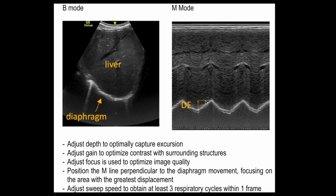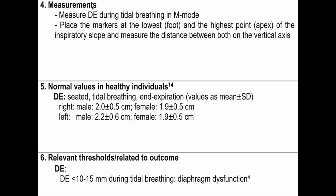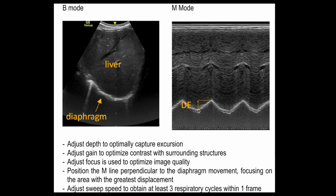This distance is the diaphragmatic excursion. Measure it during tidal breathing in M-mode by placing markers at the lowest point and the highest point of the inspiratory slope and measuring the vertical distance between the two. This vertical distance is your diaphragmatic excursion value.